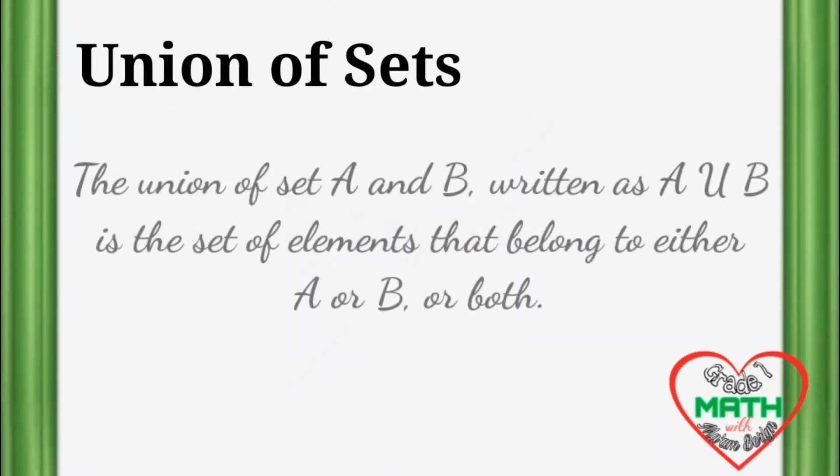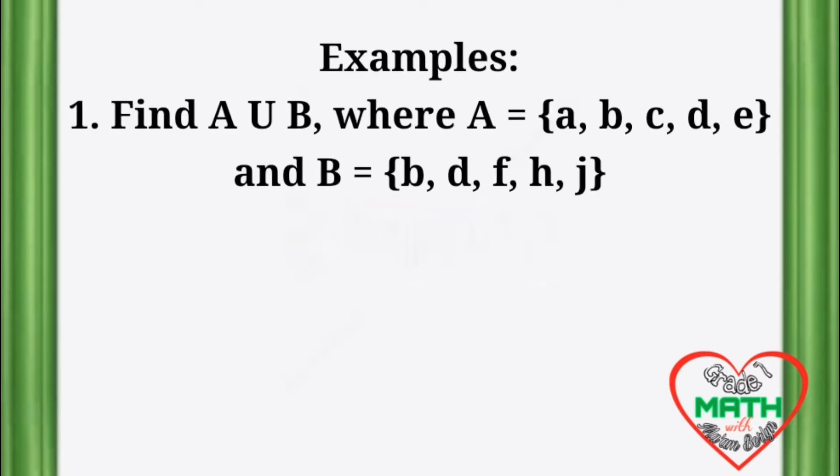Union of Sets. The union of set A and B, written as A union B, is the set of elements that belong to either A or B or both. For example, find A union B where A is equal to {A, B, C, D, E} and set B is equal to {B, D, F, H, J}.